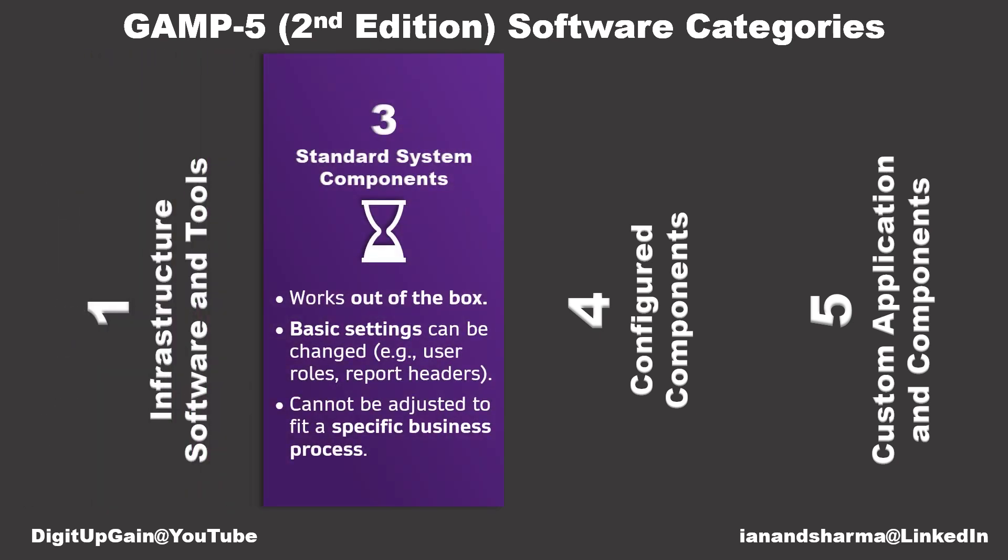Category 3 is out-of-the-box software with minimal setup. You can adjust basic settings like runtime parameters — for example, user roles, units of measurement, and reporting formats — but you cannot modify how it works.